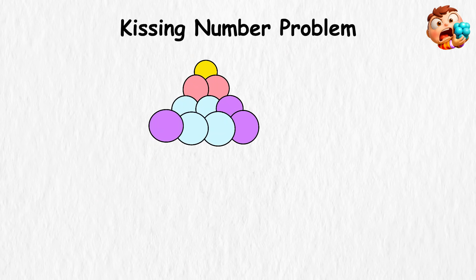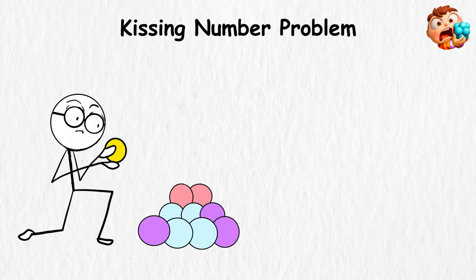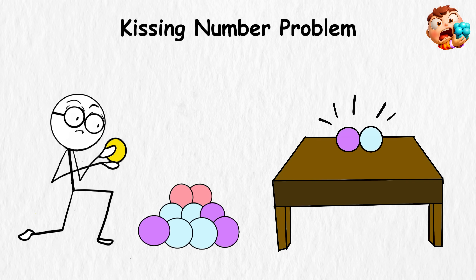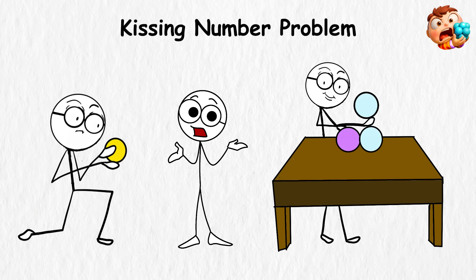Kissing number problem. Stacking spheres sounds simple, until you actually try it. Put two balls together and you get a pair. Add a third and you've got a little cluster.